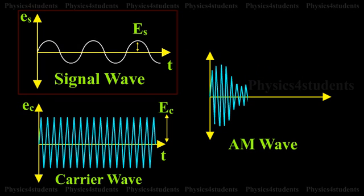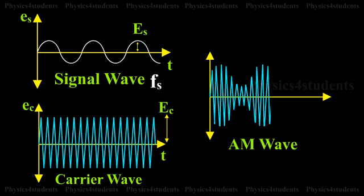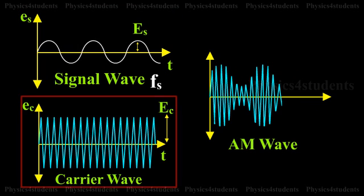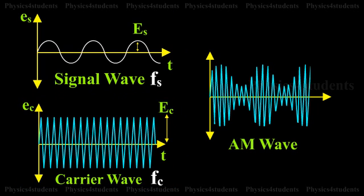The diagram also shows the audio-electrical signal of frequency Fs. The second visual shows a carrier wave of constant amplitude with frequency Fc.